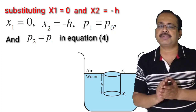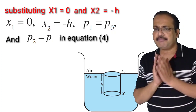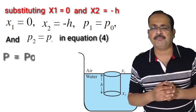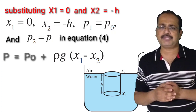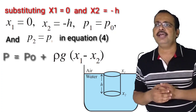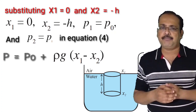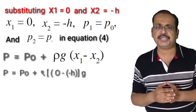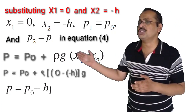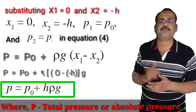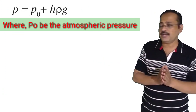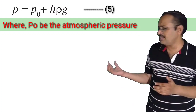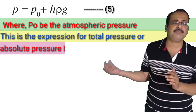In equation 4, putting P2 equal to P, P1 equal to P0, X1 equal to 0, and X2 equal to minus h, the equation becomes: P is equal to P0 plus rho times (0 minus (minus h)) times g. Therefore we get P is equal to P0 plus h times rho times g, where P is the total pressure or absolute pressure, and P0 is the atmospheric pressure. This is equation number 5, the expression for absolute pressure below the liquid surface at height h.